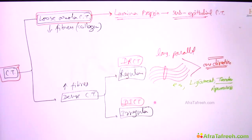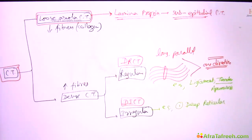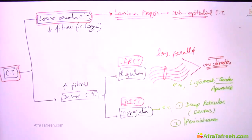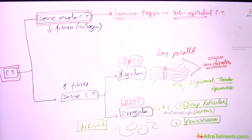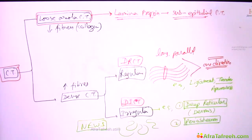Can you give examples of dense irregular connective tissue? Two examples: one is the deep reticular layer of dermis. The other example is periosteum. Periosteum is also dense irregular connective tissue because here the collagen fibers do not have a particular direction — they run north, east, west, and south in all directions. That is why they are called irregular.